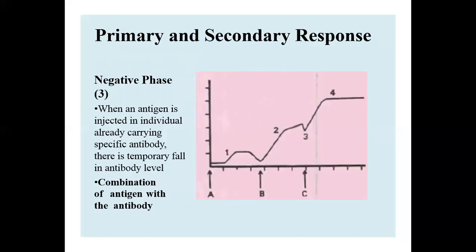The primary and secondary responses can be depicted in a graph where an antigen is injected into an individual already carrying specific antibodies. There is a temporary fall in antibody level due to combination of antigen with antibodies. In the graph, the phases of antibody response are classified: regions A to B represent the primary response, while regions B and C represent the secondary response.